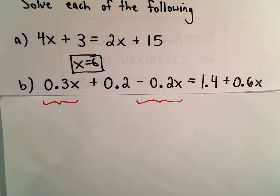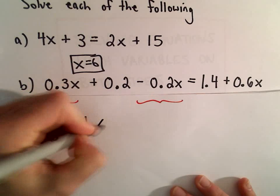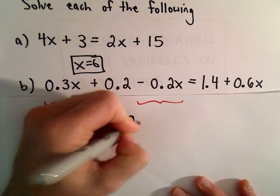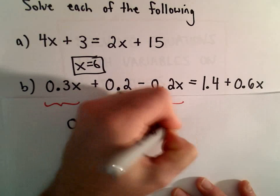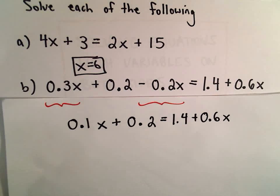so 0.3x minus 0.2x will be 0.1x plus 0.2, and I'll just jot down the right side. There's no like terms there to combine.